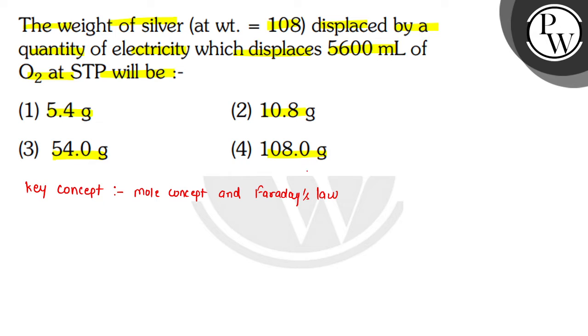We will solve this question. At STP, 5600 mL of O2 is given. At STP, one mole of oxygen occupies 22.4 liters, which can be written as 22.4 × 10³ milliliters. Since volume is given in milliliters, we'll write it in milliliters.